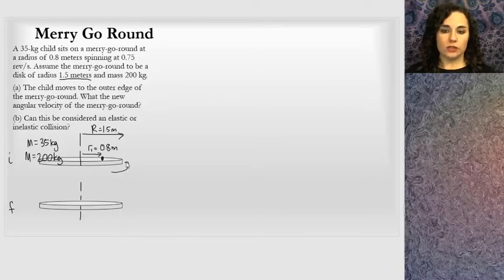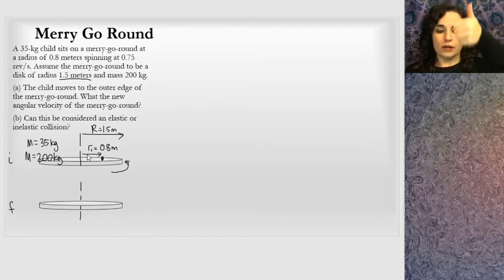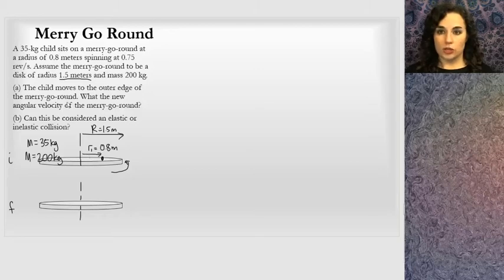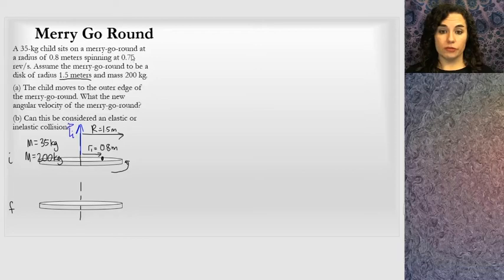I'm going to let the merry-go-round and the child be twisting around. Using the right-hand rule — if I curl my hand in the direction of rotation — the angular momentum vector points upward. That's how you find the direction of angular momentum using the right-hand rule. I'll draw the angular momentum vector upward and label it L initial. That represents the initial situation.